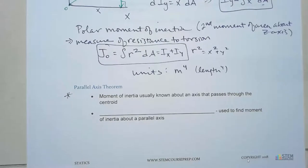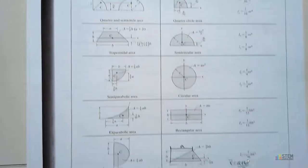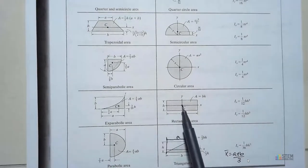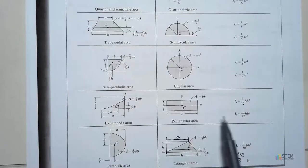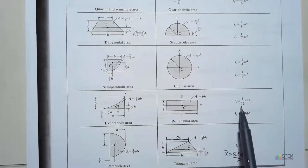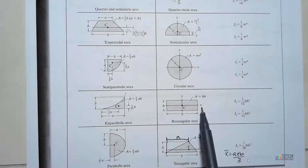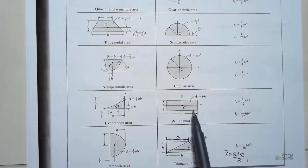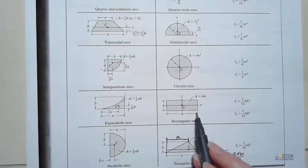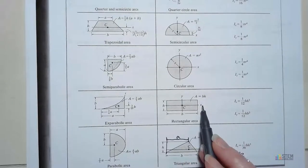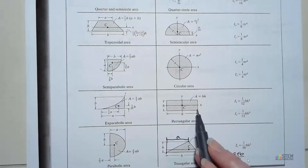If we go back to the tables we had before — these were the ones used for centroids. We have these shapes, and let's say we have this centroid C right here. We've got the x-axis and the y-axis, and we've got equations for Ix and Iy. This equation is telling you the moment of inertia about this x-axis. These two axes here are called centroidal axes. In a lot of cases, you're going to have tables like this that give you the moments of inertia about those centroidal axes. The parallel axis theorem allows us to find the moment of inertia about an axis that's parallel to the centroidal axes — for example, about an axis at the bottom of the rectangle.